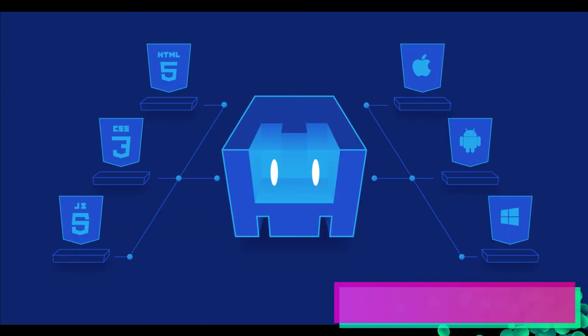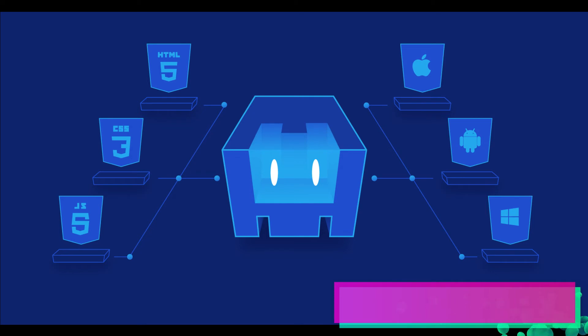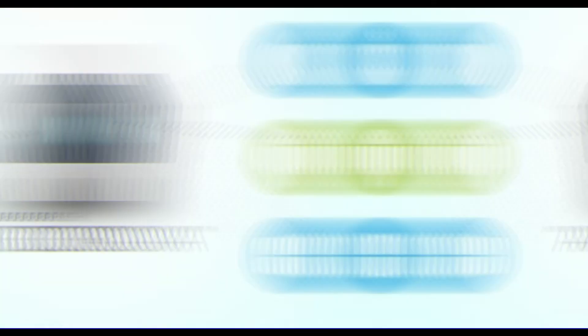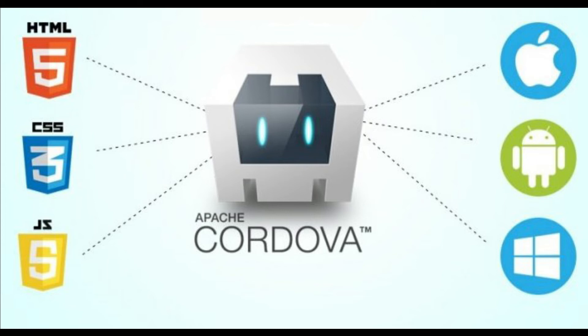Cordova is a mobile development framework that enables you to create cross-platform mobile apps with HTML, CSS, and JavaScript. Originally created by Adobe Systems and then donated to an open-source foundation, Cordova allows developers to write applications using web-based languages such as HTML5, CSS3, and JavaScript. The code can then be compiled into native apps for different platforms, such as Android, iOS, and Windows Phone, using Cordova's cross-platform toolset.